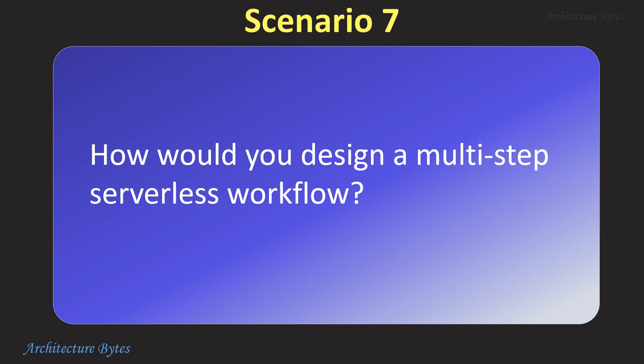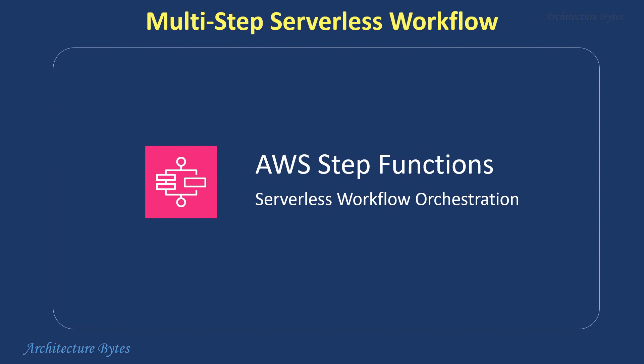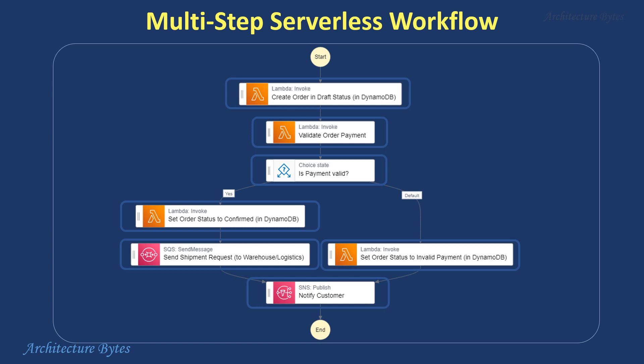How would you design a multi-step serverless workflow? AWS Step Functions is a serverless workflow orchestration service. It helps you design and automate complex workflows made up of multiple independent tasks. Think of it as a conductor for your serverless applications, ensuring each step executes in the right order and handling errors gracefully.